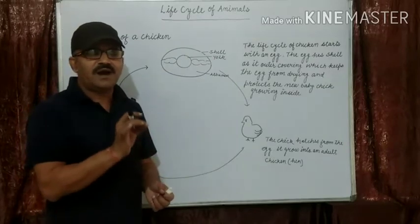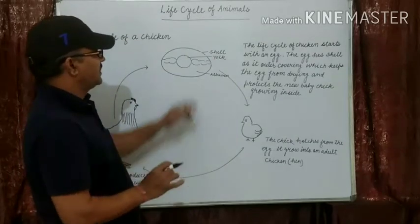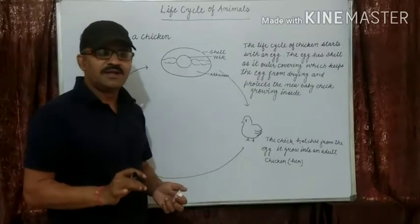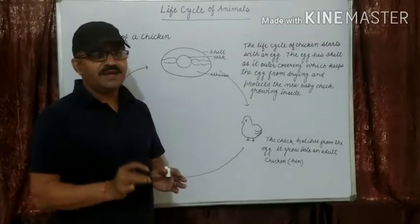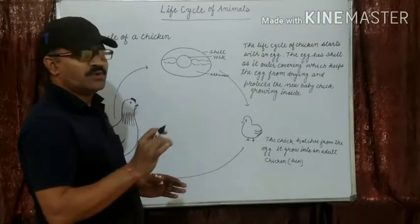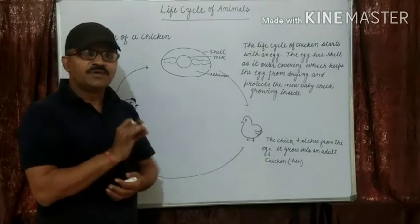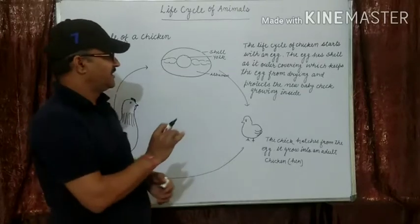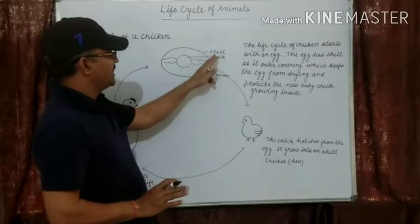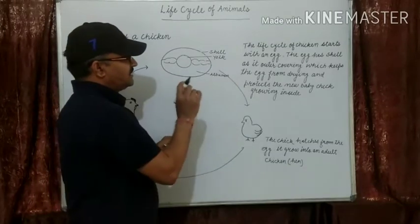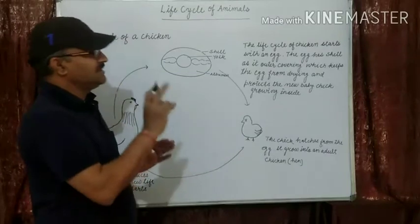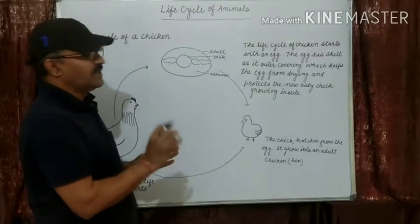The shell is the thin but hard protective outer covering of the egg. What are the functions of the shell? It protects the egg from drying, and it protects the new baby chick growing inside.